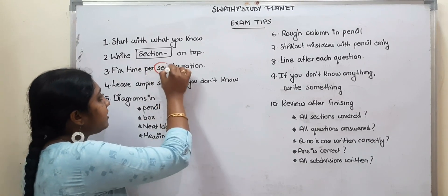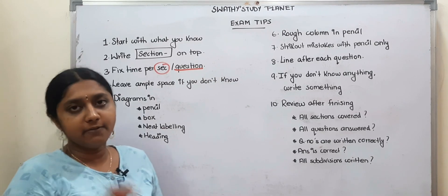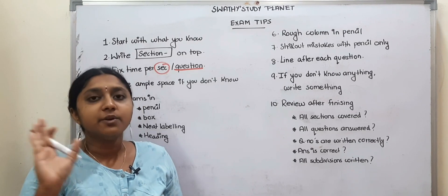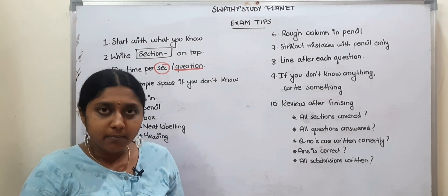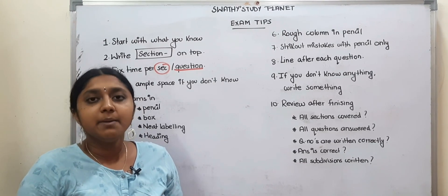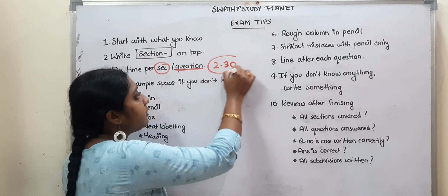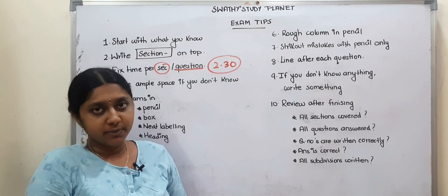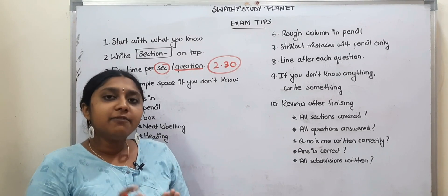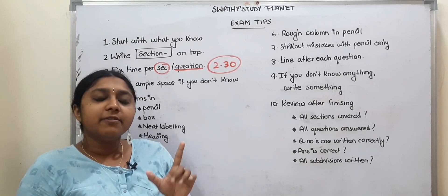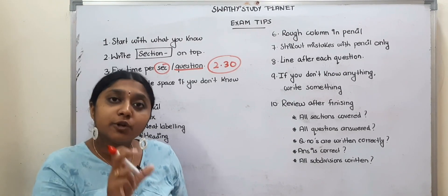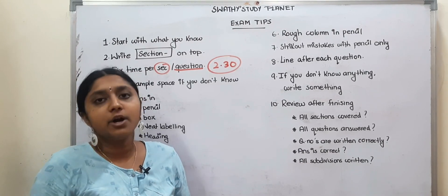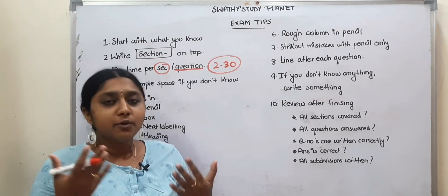In each section, fix the time you spend. For example, if your exam is 2.5 hours, you can split the time across sections — section D, C, B, and A. Check the time as you go so you can confirm you are on track for your exam. If you have time remaining, you can review your answers.